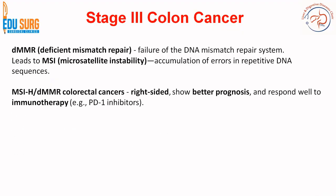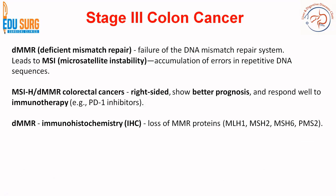Colorectal cancers can be divided into two groups: MSI-high or deficient mismatch repair. When they are right-sided, they show better prognosis and respond well to immunotherapy. We write both terms — deficient MMR and MSI-high — because their testing is done differently. Deficient MMR is detected on immunohistochemistry, showing loss of MMR proteins like MLH1.